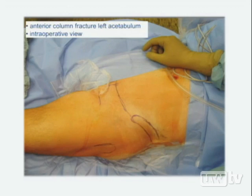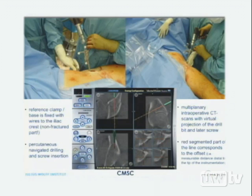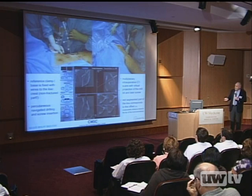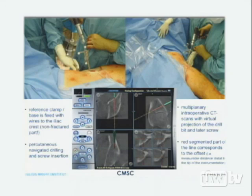In the intraoperative view, the first step is fixing the reference base with wires to the iliac crest in the non-fractured, stable part of the pelvis. Then percutaneous navigated drilling is performed, followed by screw insertion. The multi-planar intraoperative CT scans show the virtual projection of the drill bit and later the screw. The red-segmented line corresponds to the offset, indicating the correct skin incision location and required screw length.